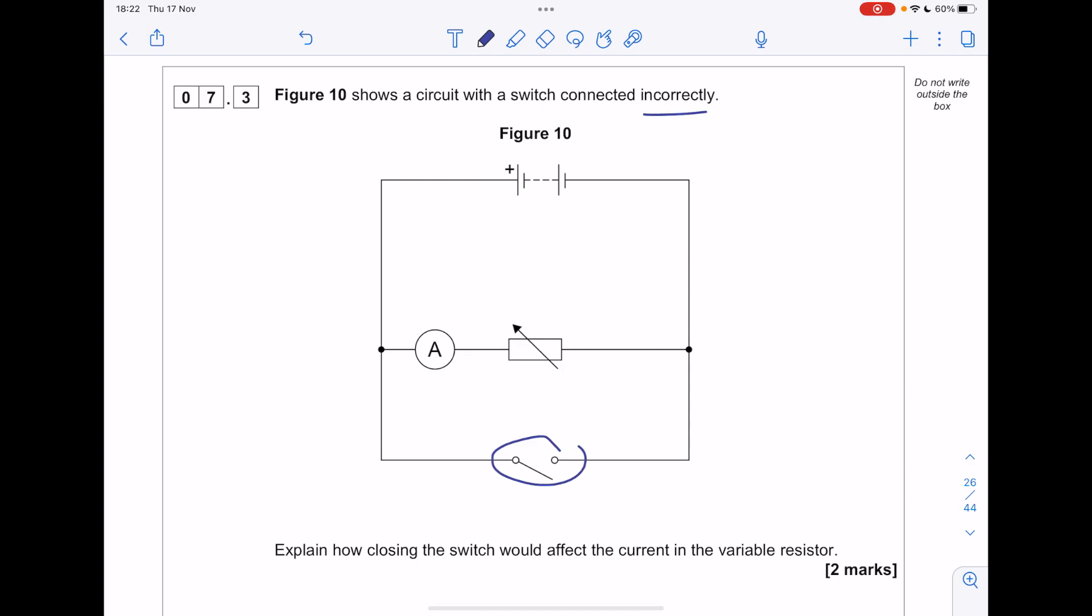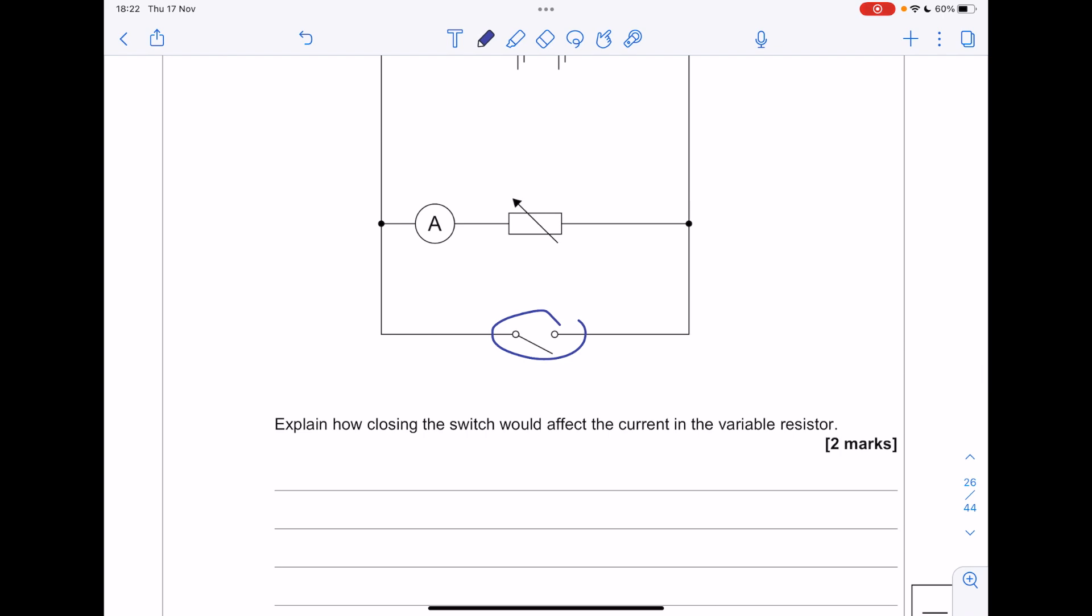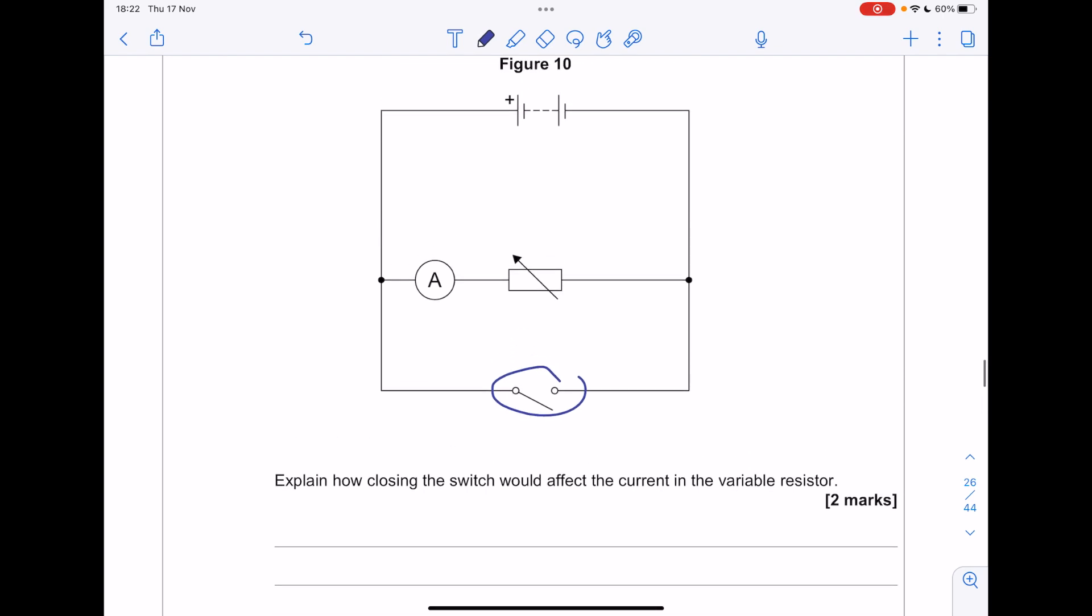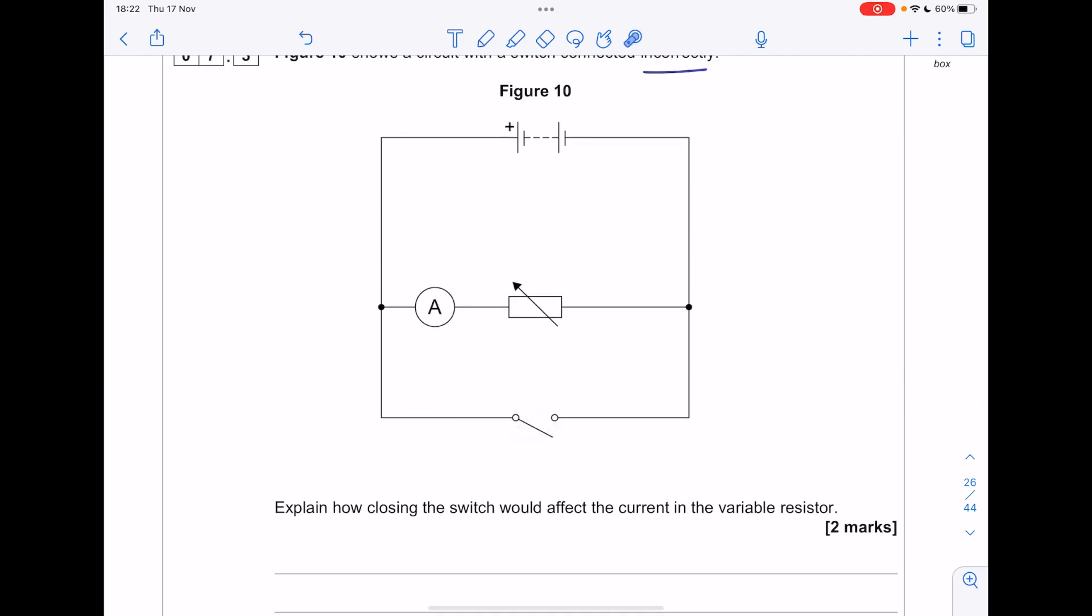Figure 10 shows a circuit with a switch connected incorrectly. Here's our switch. Explain how closing the switch would affect the current in the variable resistor. By closing the switch, it means the current would flow this way, because it would be the path of least resistance, meaning that the current here would dip to virtually zero.